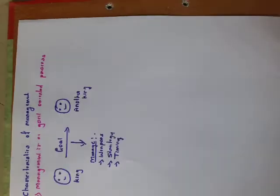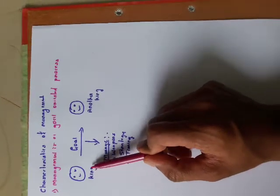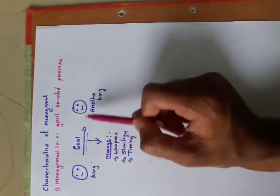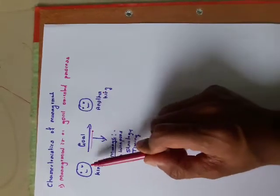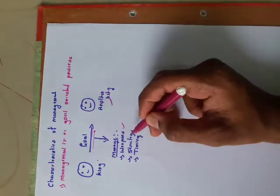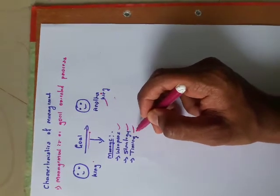The first one is: management is a goal-oriented process. Management is a goal-oriented process because management strives to achieve a certain final destination or final goal. Let us take an example. We are having two kings, and one king is thinking of defeating another king — that is his final goal. For defeating another king, this king has to manage the weapons, the strategies, and the timing required to defeat the other king. Most importantly, timing.